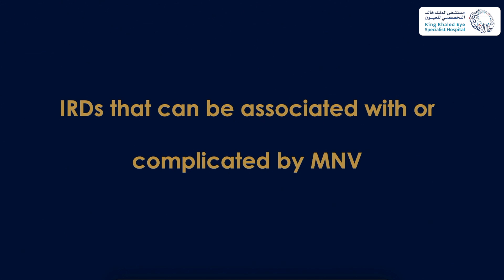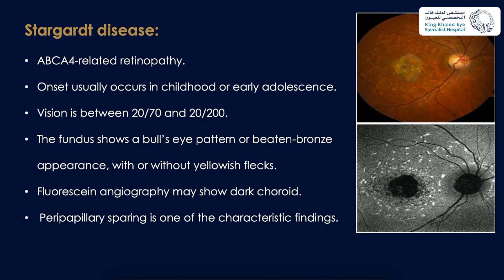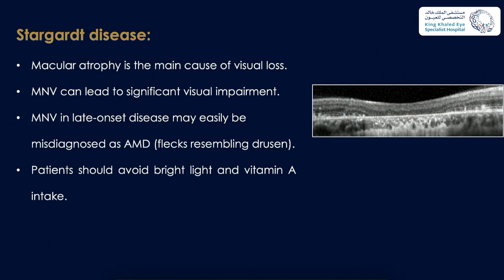Starting with Stargardt disease, or ABCA4-related retinopathy: onset usually occurs in childhood or early adolescence, vision between 20/70 and 20/200. Clinically they have a bull's eye pattern or beaten bronze appearance with or without yellowish flakes. Fluorescein angiography may show dark choroid with peripapillary sparing, clearly evident on fundus autofluorescence. Macular atrophy is the main cause of visual loss. MNV in late-onset disease may be misdiagnosed as AMD. Patients should avoid bright light and vitamin A intake.